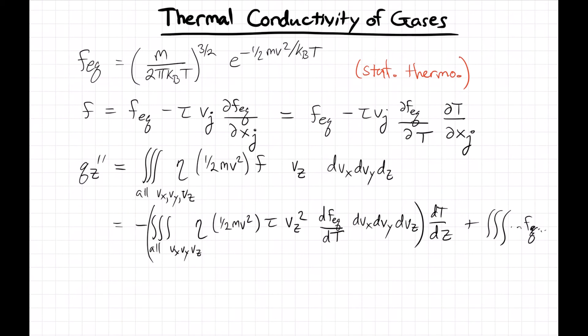The integral involving the equilibrium distribution gives zero, because if you didn't have a gradient, that's the only term that would appear, and there would be no transport with no gradient. You can plug in numbers to show it's zero, but it's obvious it turns out to be zero.